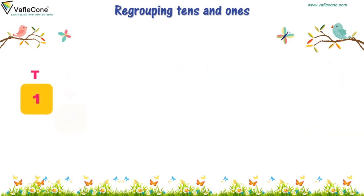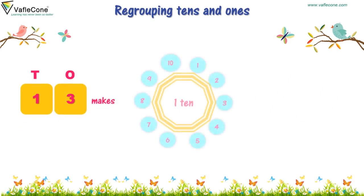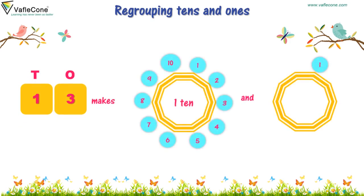One, three — thirteen makes one ten and one, two, three. Three, one.